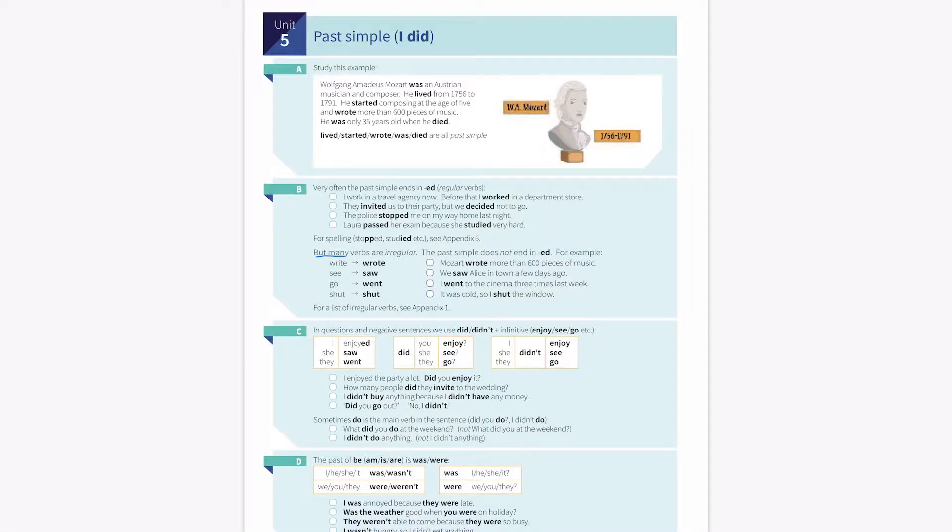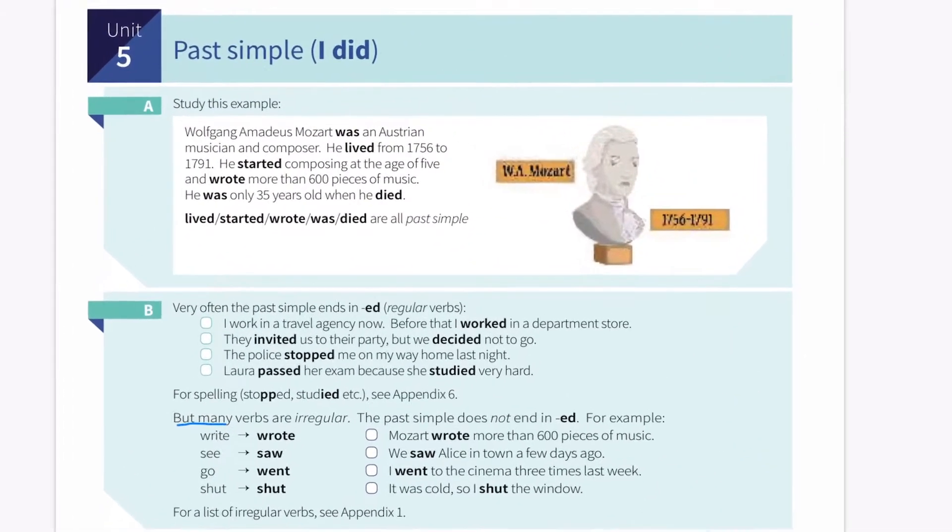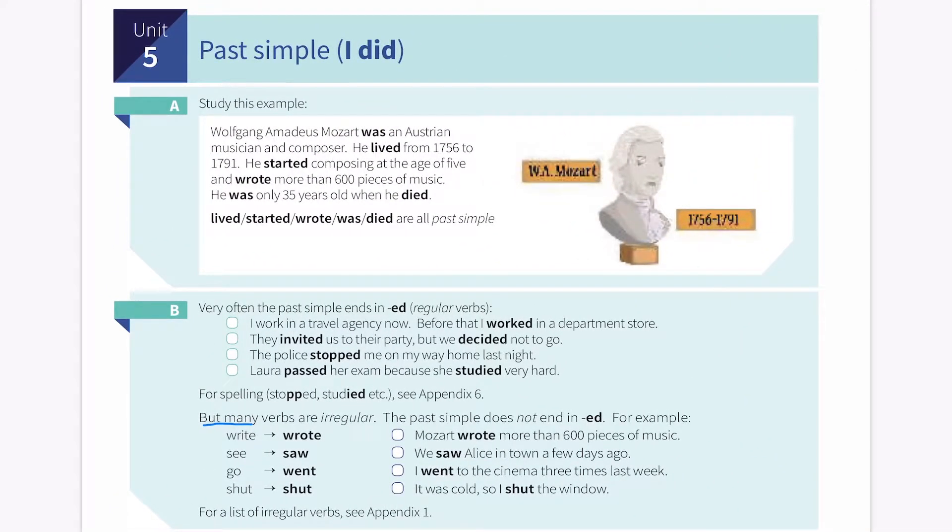Hello everyone, welcome to Unit 5, Past Simple. I did. So let's read this paragraph here. Wolfgang Amadeus Mozart was an Austrian musician and composer. He lived from 1756 to 1791. He started composing at the age of five and wrote more than 600 pieces of music. He was only 35 years old when he died.